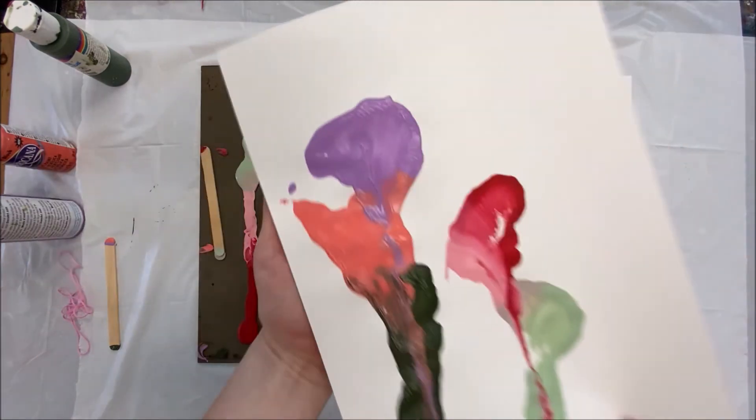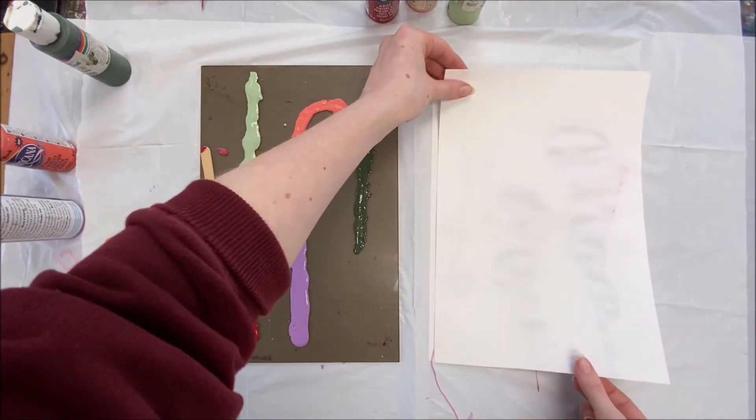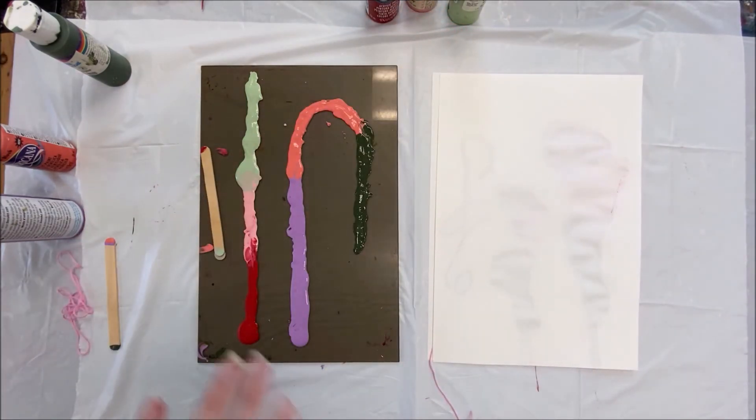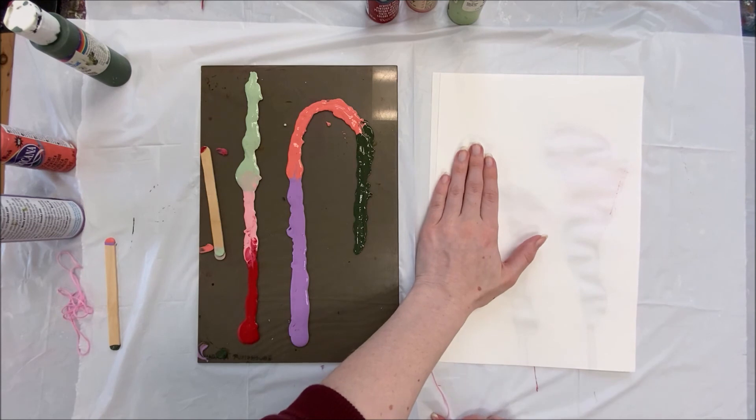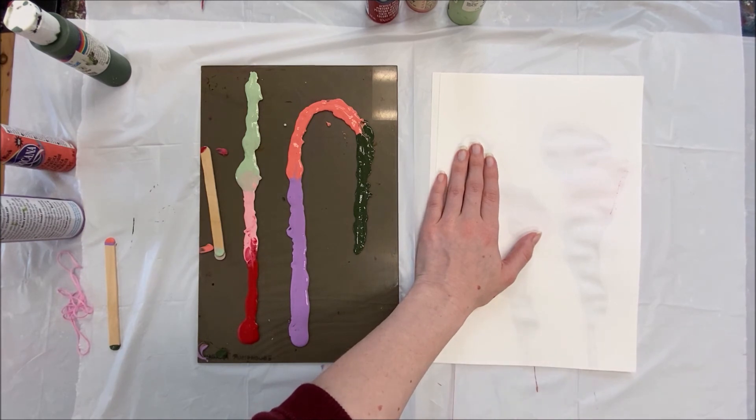We'll take our top page, and sandwich our string. Now take your hand, push down gently, but firmly, grab the end of the string with no paint, and pull all the way out.